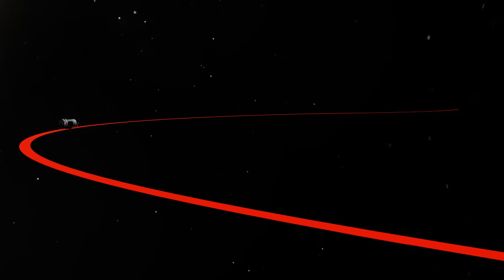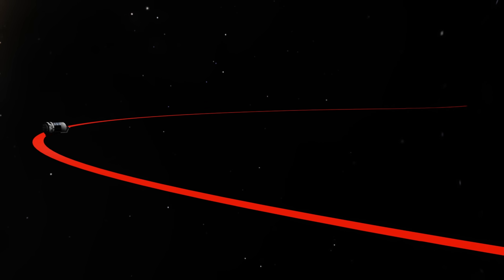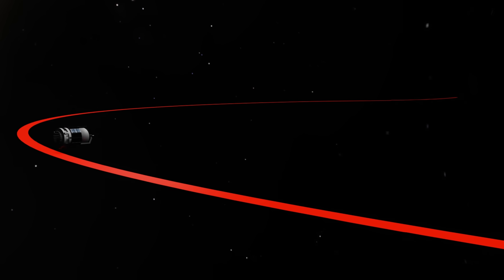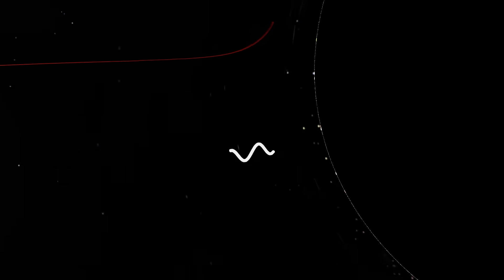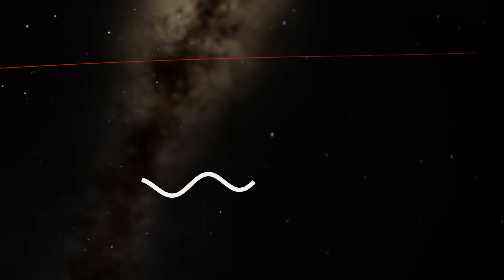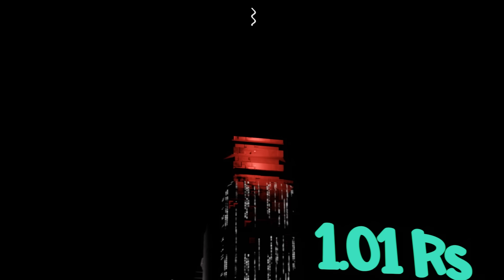Before descending into the black hole, we left a probe orbiting above at the ISCO. Every time the probe passed overhead, it sent out a radio wave signal at 10 megahertz. A light wave's frequency is time-dependent. If our time is different down here near the event horizon, we should observe a frequency other than 10 megahertz.